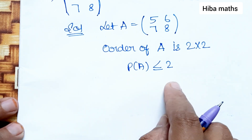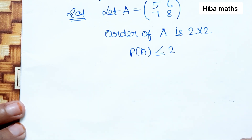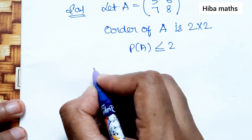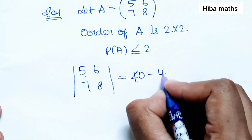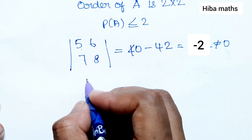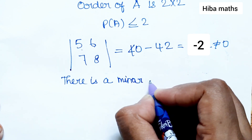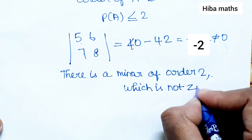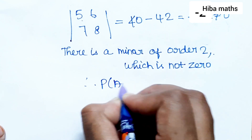The rank of A is less than or equal to 2. We check if the second order determinant equals zero. Computing: 5×8 minus 7×6 gives 40 minus 42, which equals minus 2. Since this is not equal to 0, there exists a minor of order 2 which is not equal to 0. Therefore, rank of matrix A is equal to 2.